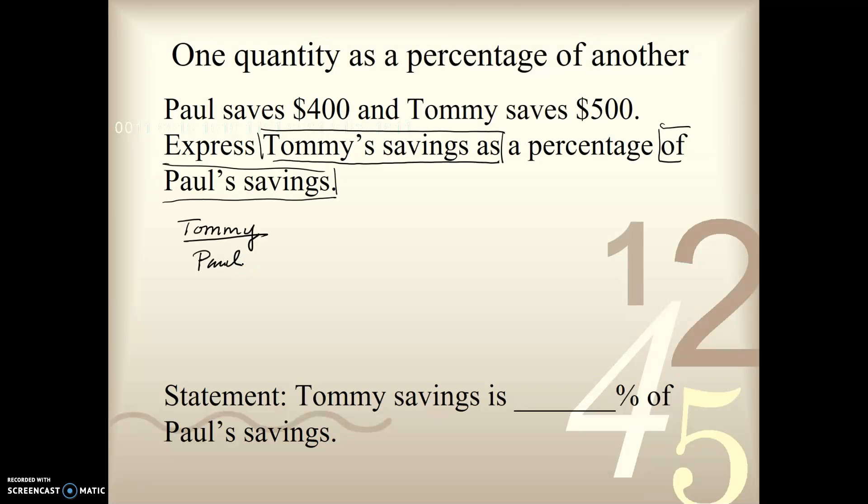Which is going to give me a percentage greater than 100, but that's okay. So Tommy had $500, and Paul had $400. Now we're going to convert this to a percentage. Let's use method 1, and we'll divide both of those by 4. 400 divided by 4 is 100, and then 500 divided by 4 is going to be 125. Let's see how I get there. So 5 divided by 4 is 1, 1 times 4 is 4. Subtract, bring down the next 0, 4 goes into 10 twice. Bring down that other 0, and that's how we get 125.